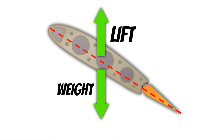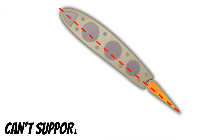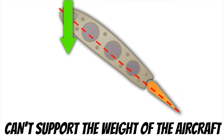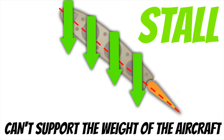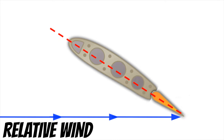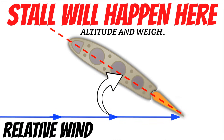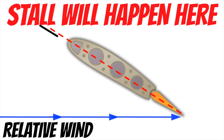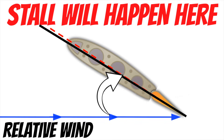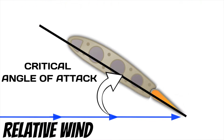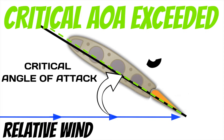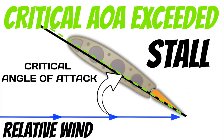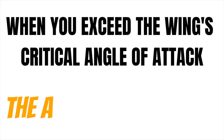If we continue to increase the angle of attack, at some point the wing will no longer be able to support the weight of the aircraft, and we'll get a rapid loss of lift — this is what we call a stall. Every airplane has a specific angle of attack that it stalls at. Altitude and gross weight can affect the airspeed at which your airplane stalls, but the angle of attack is always the same. Right before the airplane stalls, it reaches the point where the chord line is at the greatest angle with the relative wind. This maximum angle is what we call the critical angle of attack, and when you exceed the critical angle of attack, the airplane will stall every single time.